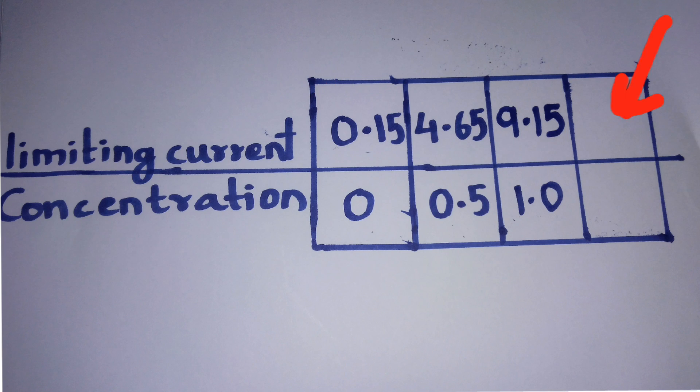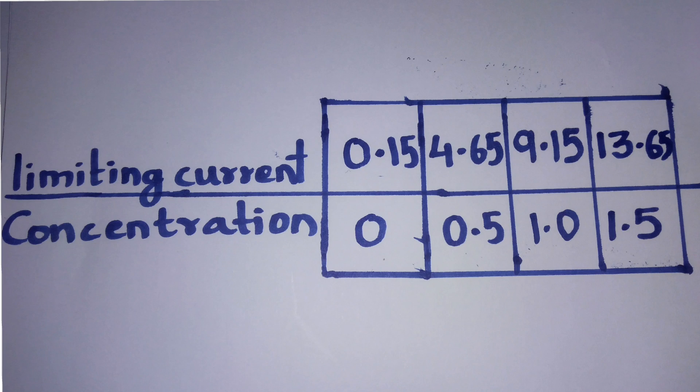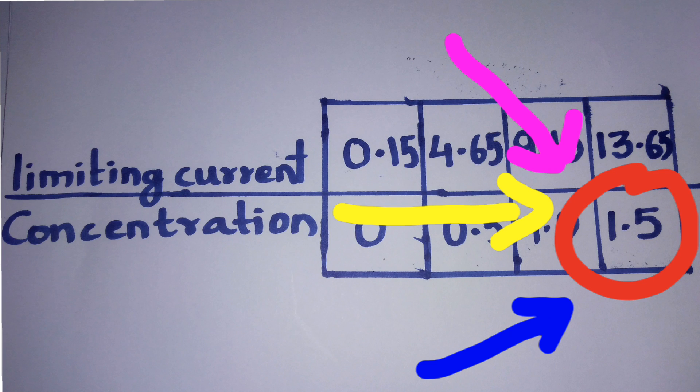In the next box, when you add 4.50 to 9.15, we get 13.65. And the concentration here will be 1.5. This is our answer.